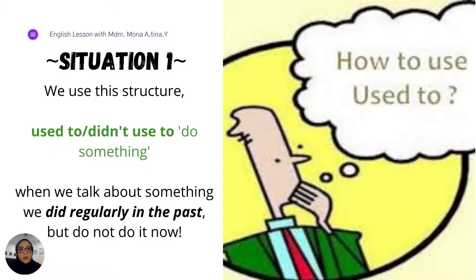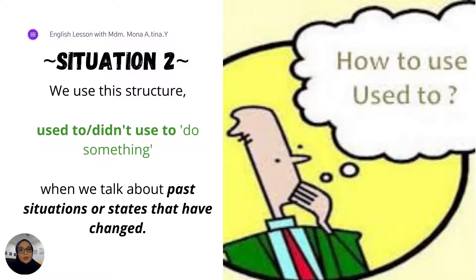Now let's go to how we are going to use the structure used to. We basically use the structure used to when we want to talk about something that we did regularly in the past but do not do it now - something that we have done before but not these days. The second situation is when we want to talk about past situations or states that have changed.